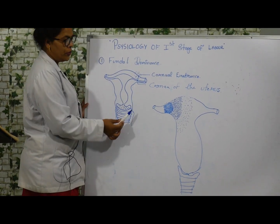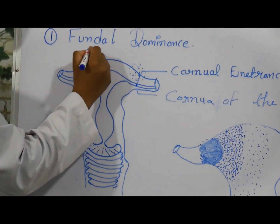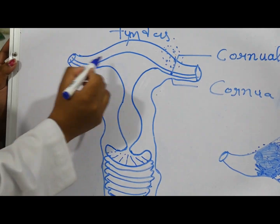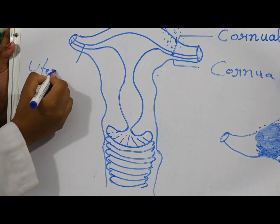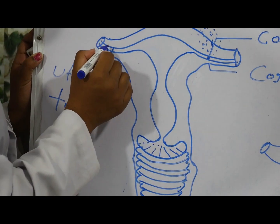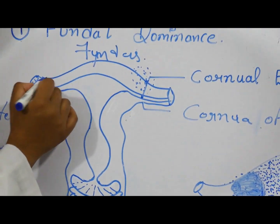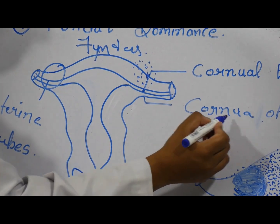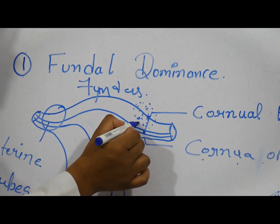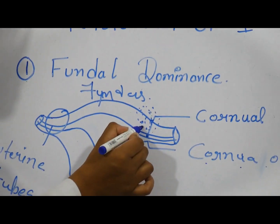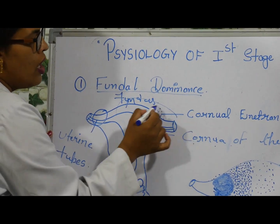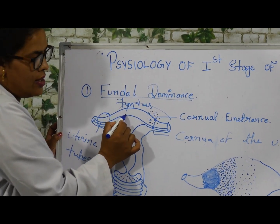This is the structure of the uterus — this is the fundal region, known as the fundus of the uterus, and these are the two uterine tubes, also called fallopian tubes. Bilaterally on both sides, this area is known as the cornual region of the uterus. Uterine contractions are generated from this cornual region, which is situated in the fundal region of the uterus.